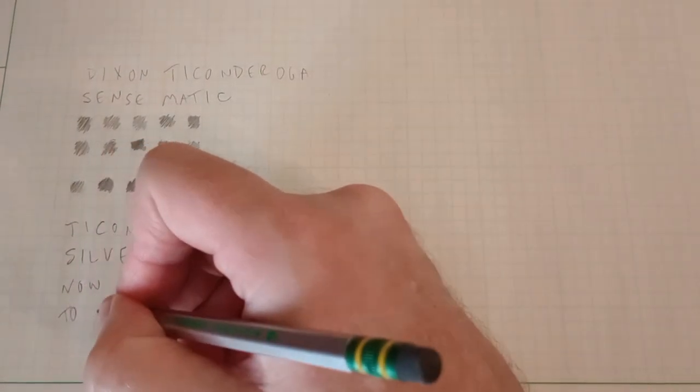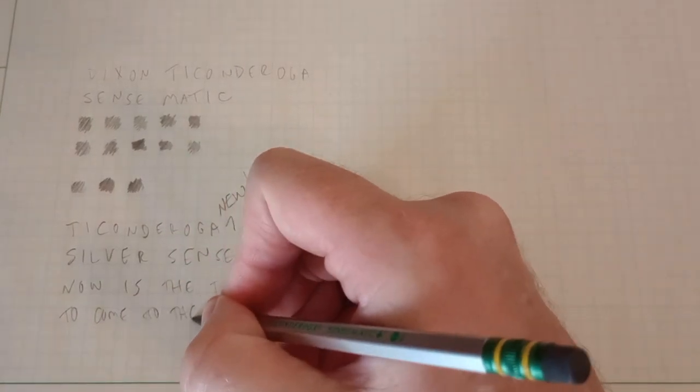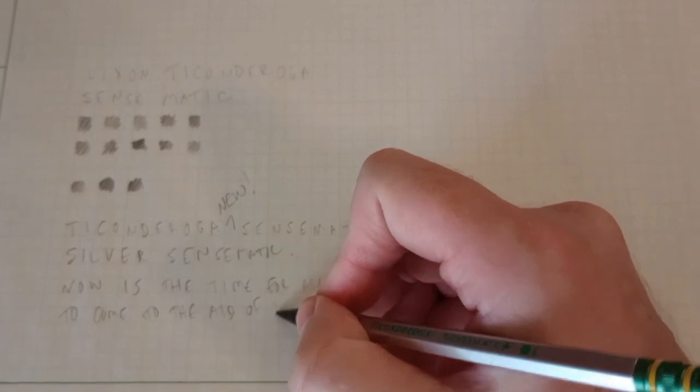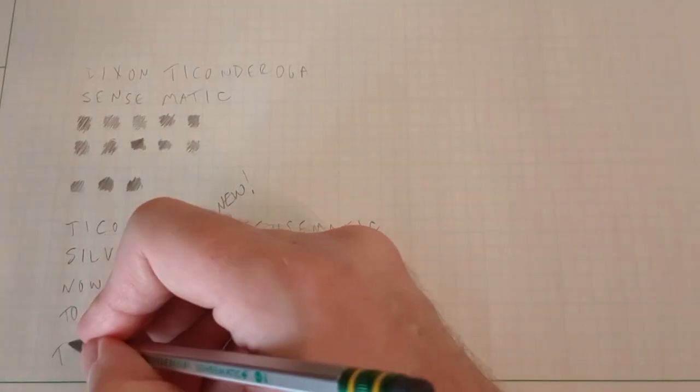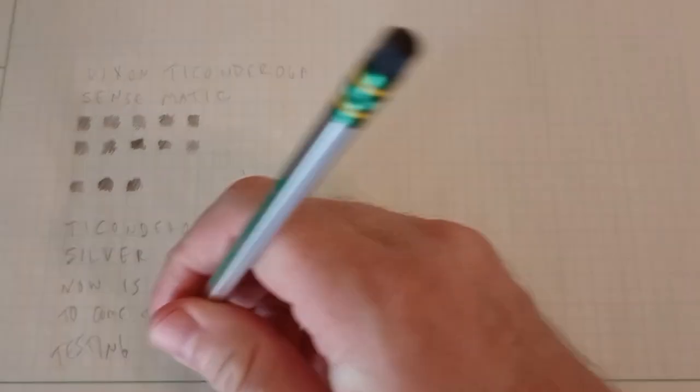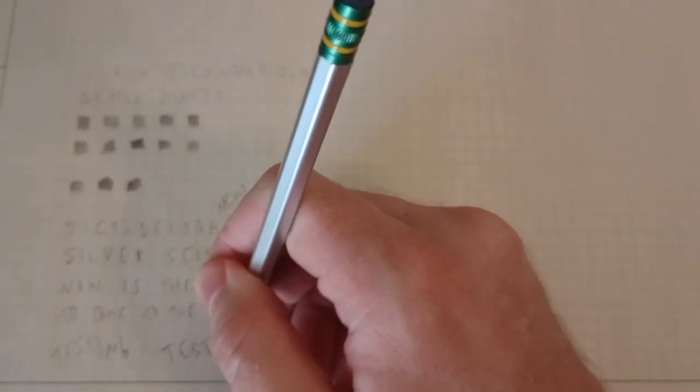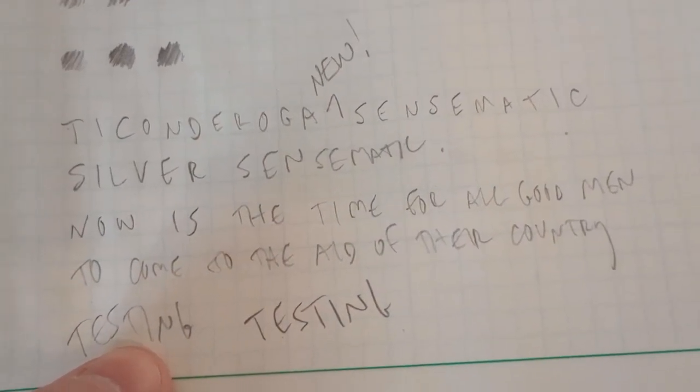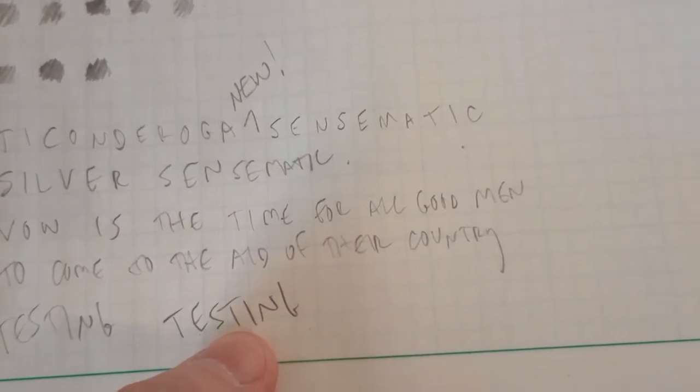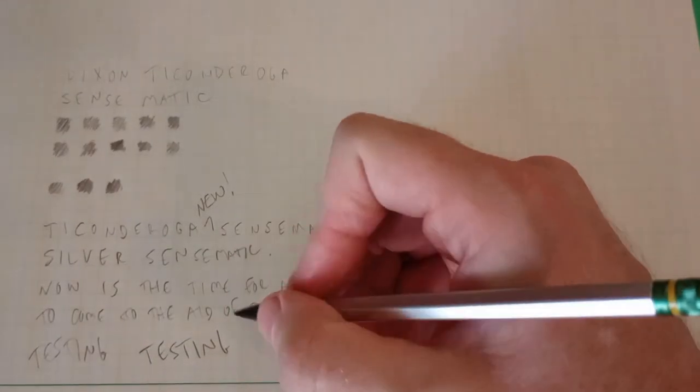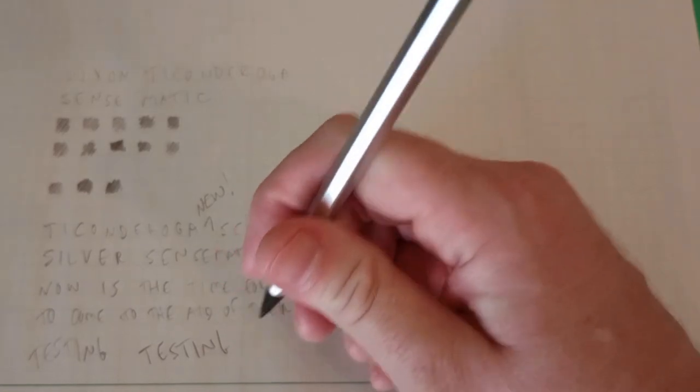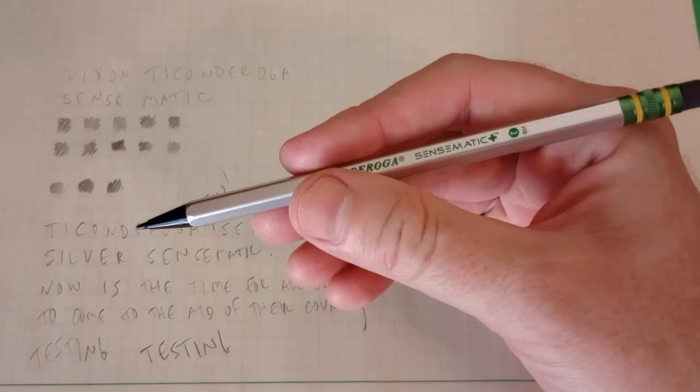When you write with it at a normal writing angle, at least if you're me, and use the angle that I use, it feels kind of scratchy and like it's not making full contact. And you get a lighter line. So the difference between holding it at a normal writing angle versus more straight up and down, you get a darker line. So you can, I guess, vary the darkness, thickness of the line by doing that. But if you're writing and you have a preferred angle of writing, and it's not within the sweet spot of this pencil, your experience will suffer for that reason.